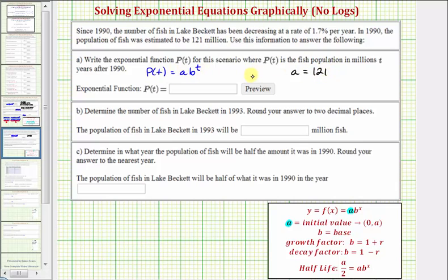The base b is going to be the decay factor since the population is decreasing at 1.7% per year, where b, the decay factor, is equal to one minus r, where r is the percent of decrease per year. Notice that the percent of decrease per year equals 1.7%, but this must be expressed as a decimal, which would be 0.017. Therefore, the base b is equal to one minus 0.017, which is equal to 0.983.